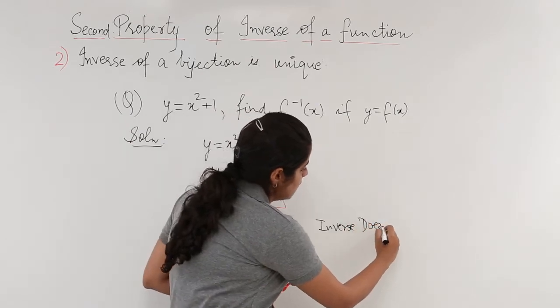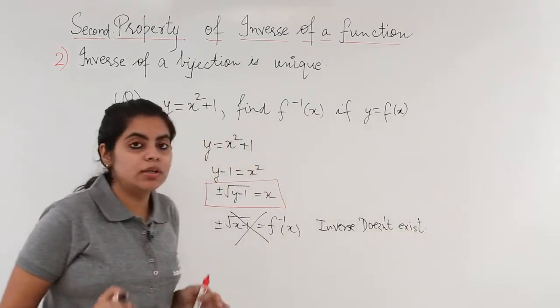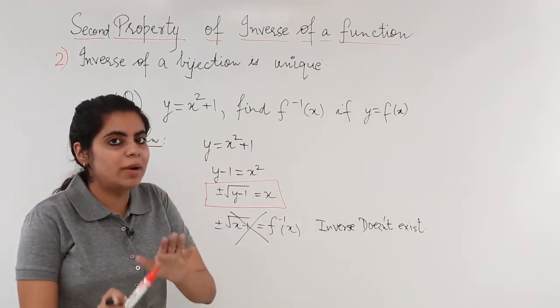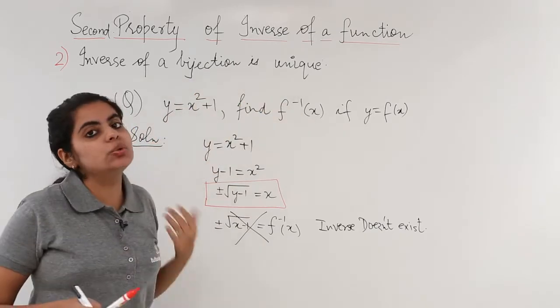So actually what happens is, if you have a bijection, always you would get a unique inverse.